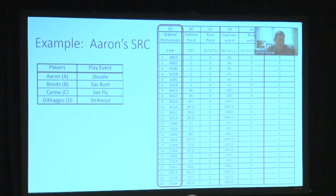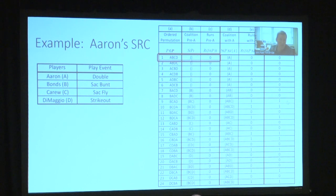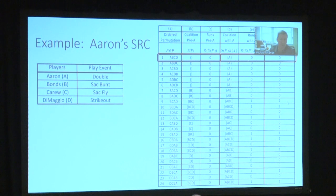In permutation one, we construct the coalition by first adding Aaron, then Bonds, then Carew, then DiMaggio. In order two, we add Aaron, then Bonds, then DiMaggio, then Carew, and so on down to the 24th permutation. For the first ordered permutation, we calculate Aaron's SRC. He's added first, so nobody is in the coalition before him. No play events means no runs, so his marginal contribution is zero. If we add Aaron after Bonds — who only has a bunt out — a double in front of that still doesn't score a run.